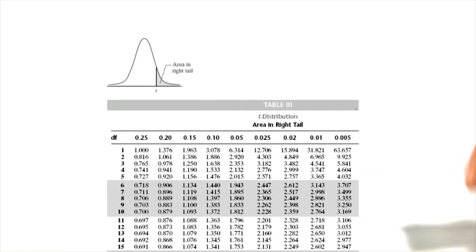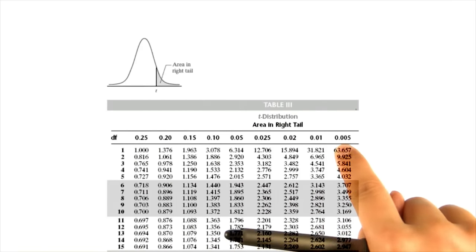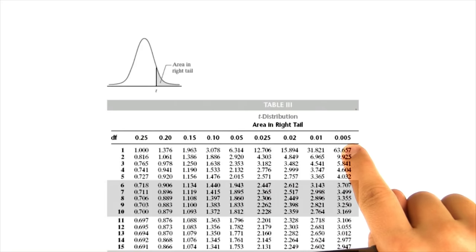Unlike the z table, the t table tells us the critical values in the body. And up here, the column rows are the area in the right tail.